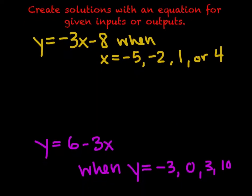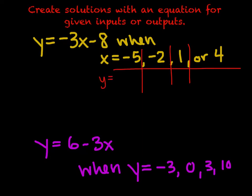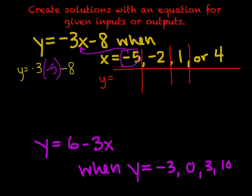Create solutions for an equation with the given inputs or outputs. We have y = -3x - 8, and we need to figure it out for when x equals -5, -2, 1, or 4. I like to create a nice little table for this setup. For every x value, we put it into the equation and solve. So we have y = -3 times -5 minus 8. Negative 3 times negative 5 equals positive 15, and 15 minus 8 equals 7. So when x = -5, y = 7.